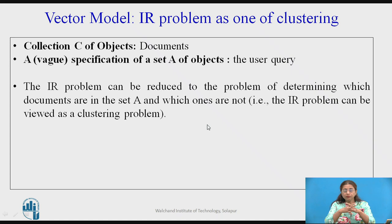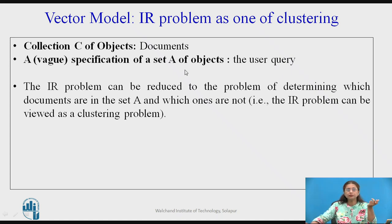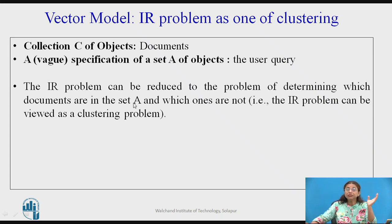How can this IR problem or retrieval problem be considered as a clustering problem? The collection of objects is nothing but our documents or text collection, and the vague description is nothing but the query — your description of the object. The IR problem can be reduced to finding the documents which are in set A, meaning similar to the user query, and which are not in set A.